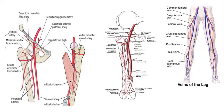The femoral artery begins as a continuation of the external iliac artery. In this diagram, you can see the external iliac artery, which is itself a branch of the common iliac artery, which is one of the terminal divisions of the abdominal aorta. The external iliac artery passes beneath the inguinal ligament at the mid inguinal point.